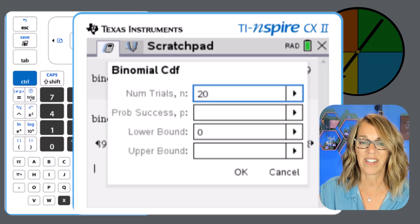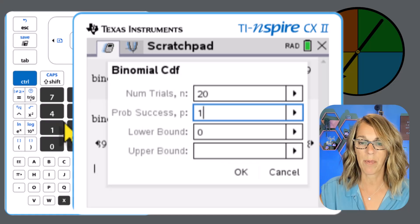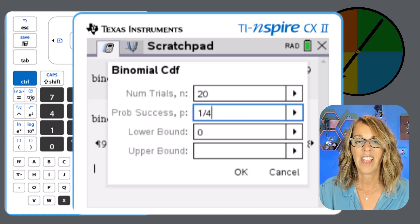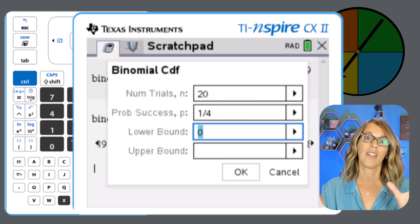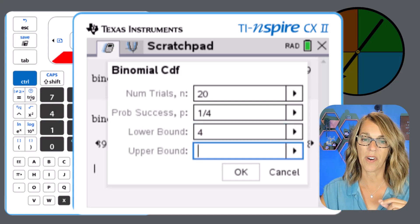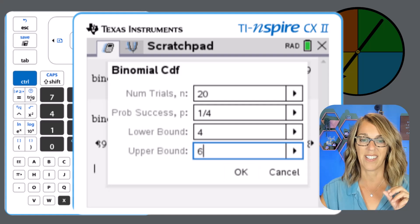So the number of trials is still 20. And then arrowing down, the probability of landing on a yellow in one spin is still one out of four. And now if I arrow down, it wants to know the lower bound. Well, remember, this is between four and six. So my lower bound is four and my upper bound is six.